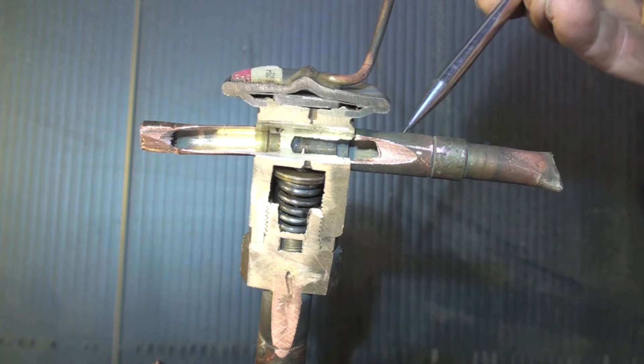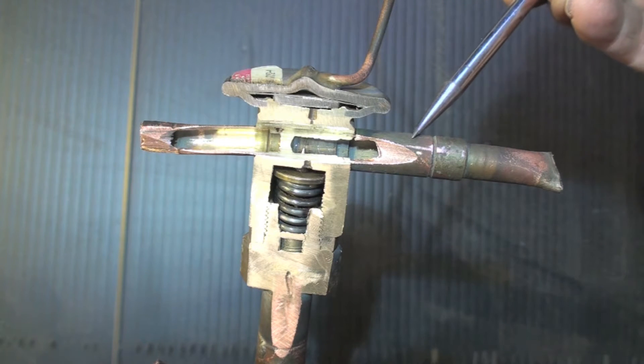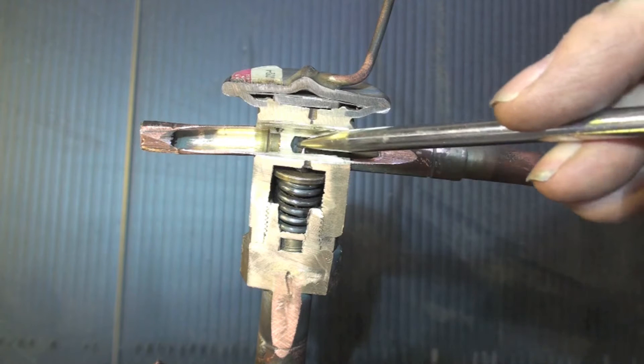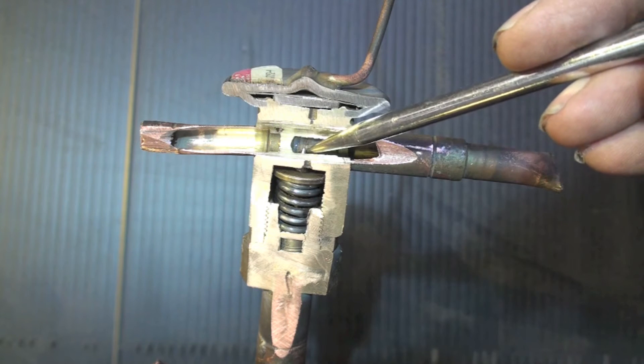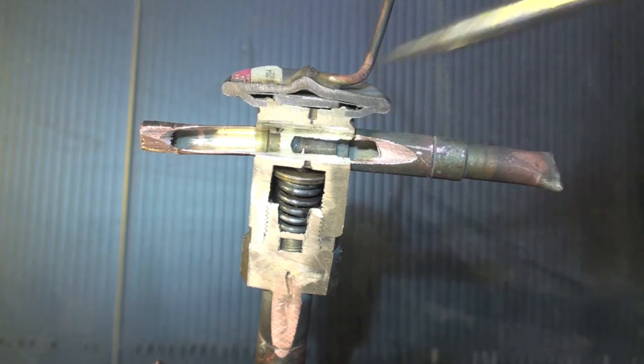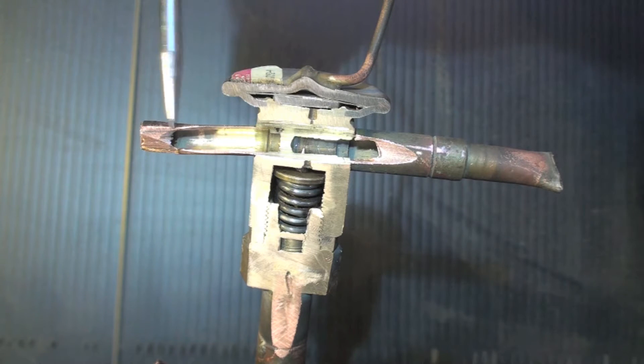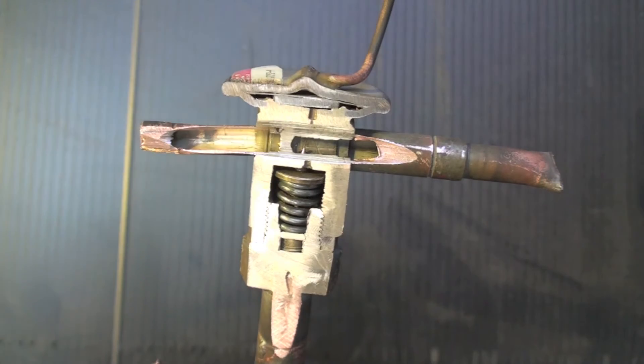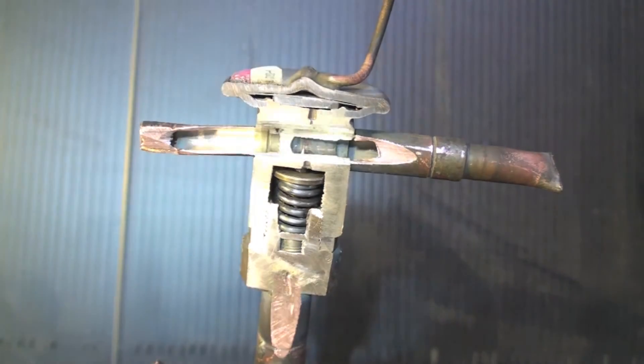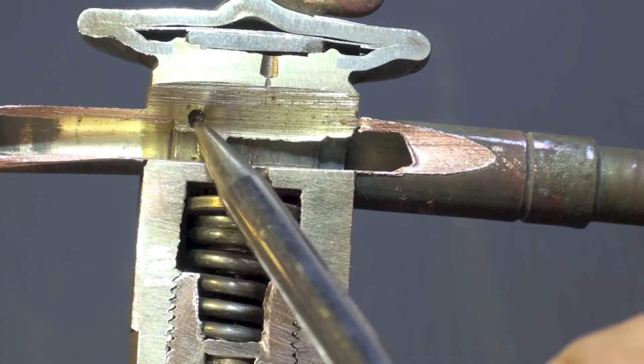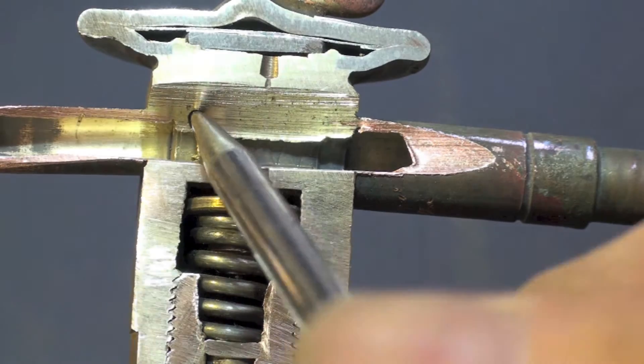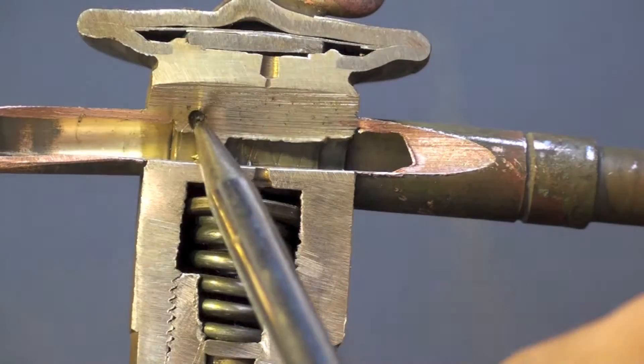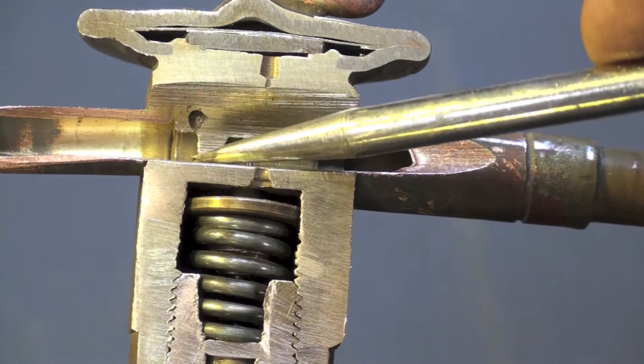Here we have the liquid line inlet where liquid refrigerant goes right here to where this needle valve is. This line right over here is an equalizing line. You can't see it well, let me see if I can find it. There, this little hole here is where the equalizing line goes. There's a wall right here.